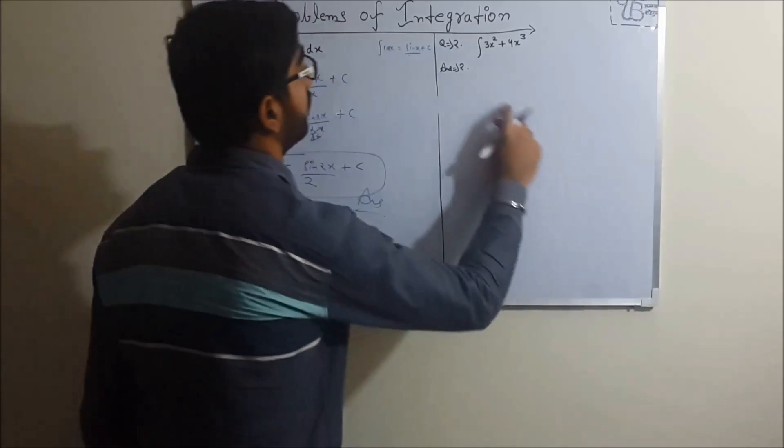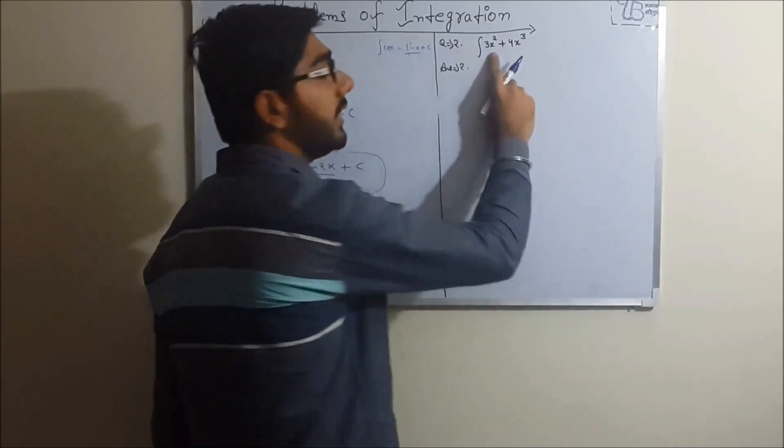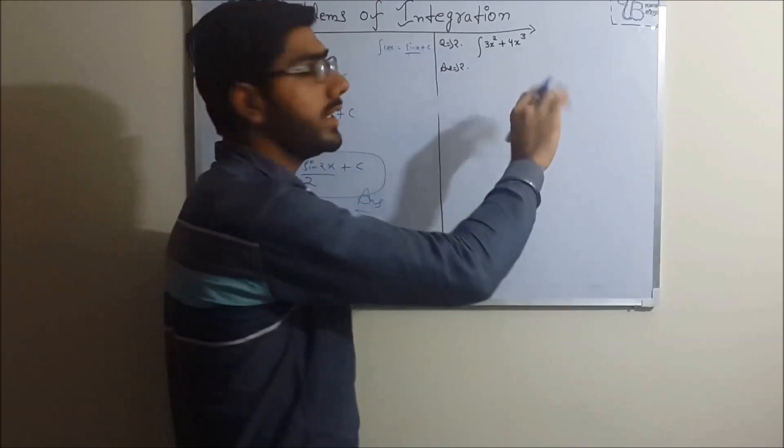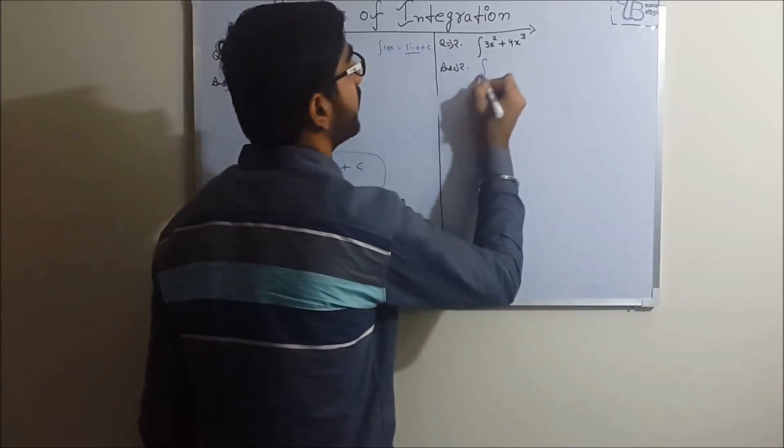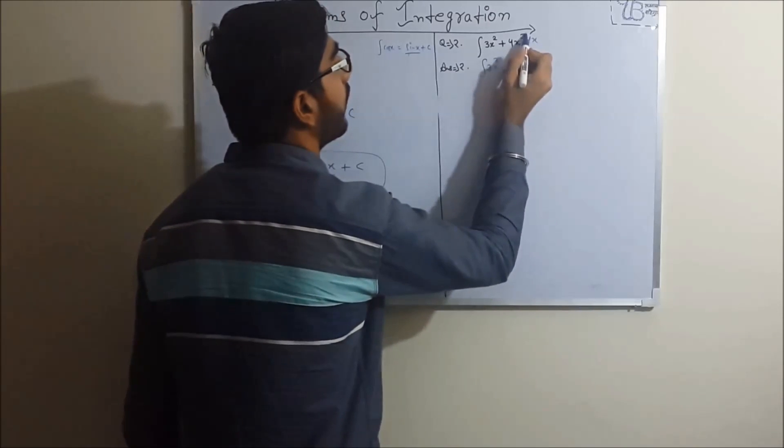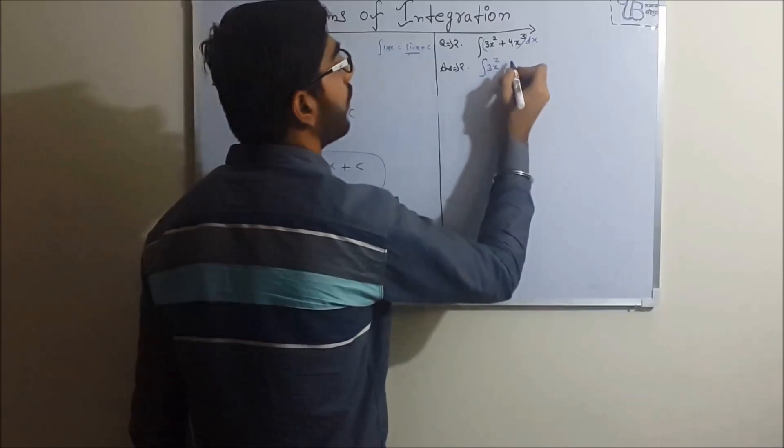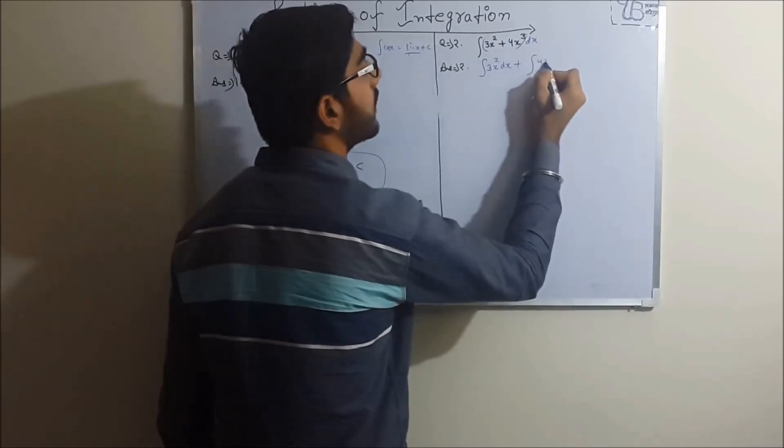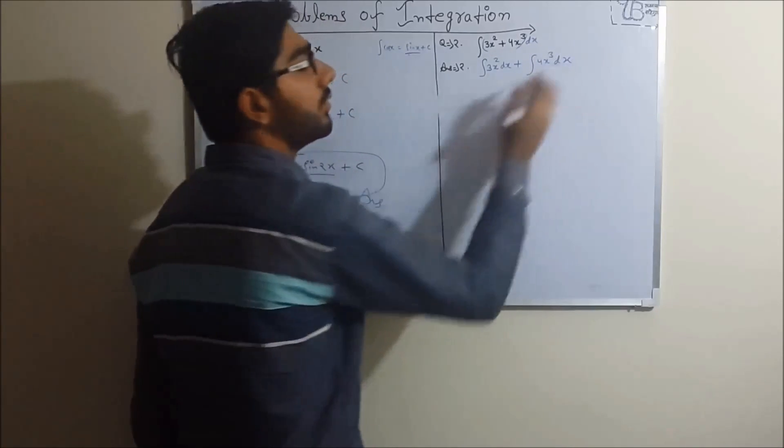Okay friends, this is our answer. And similarly, the second question is this: integration of 3x square plus 4x cube. Friends, you don't have to worry - you can separate them. Integration of 3x square, this is with respect to dx, so you can separate them like this.